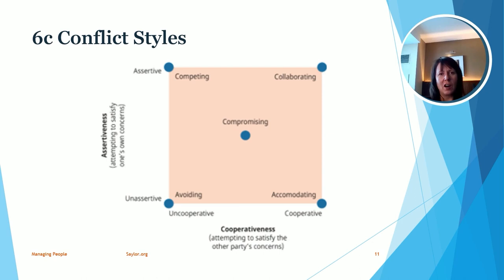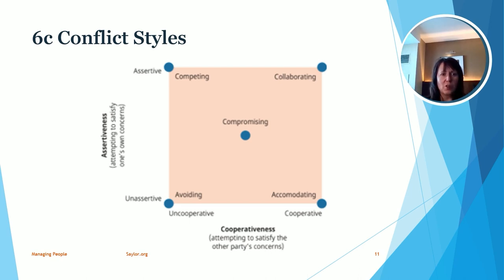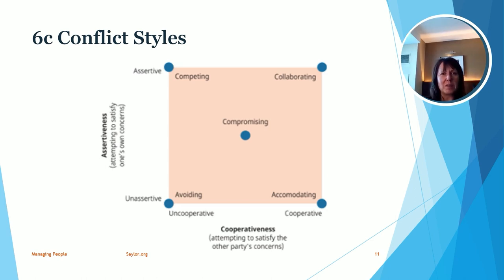Now let's discuss how you can actually handle conflict. There are two main categories: assertiveness and cooperativeness. Assertiveness refers to how important it is to you to have your own concerns addressed in the conflict — if it's not very important, you can be unassertive, while if it's really important, you move up the scale to be more assertive. Cooperativeness is the attempt to satisfy the other person's concerns — uncooperative means there isn't much reason to satisfy their concerns, while cooperative means there's a strong reason to work with that person again.